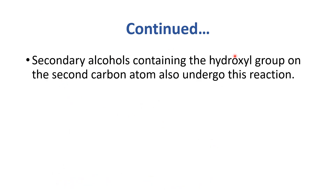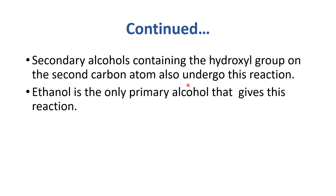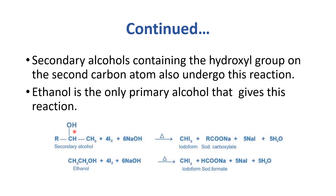Secondary alcohols containing the hydroxyl group on the secondary carbon atom also undergo this reaction. Primary alcohol ethanol also gives iodoform. The product is the same, but the ratio of iodine and sodium hydroxide changes. For secondary alcohols, the ratio of iodine to NaOH is 6.